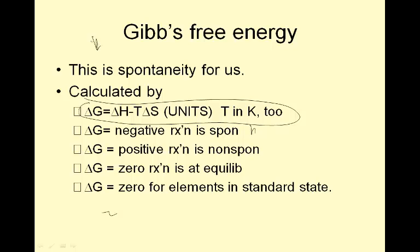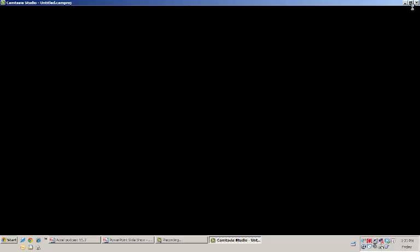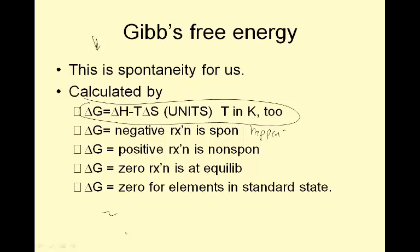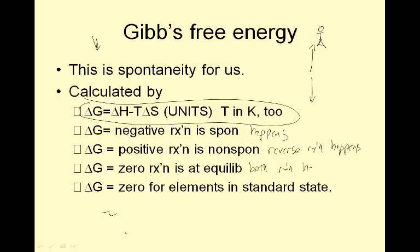If delta G is negative, the reaction is spontaneous — that means it happens. If it's positive, the reaction is non-spontaneous and the reverse reaction happens. So that means the opposite would happen than you think would happen. If delta G is zero, the reaction is at equilibrium — that means both reactions happen.